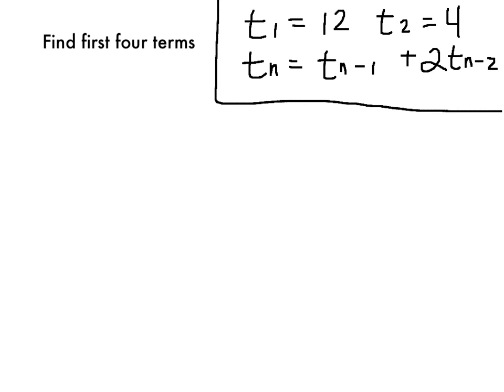What you'll notice about this example is we're given t₁ and t₂. And in our tₙ, or our recursive definition, there's a tₙ₋₁ in there, and a tₙ₋₂. t sub n minus 2 is going to be two terms ago. So we have to look back to the previous term, and then one beyond that. So we're still looking for our first four terms here. t₁ is 12, that's given to us. t₂ is 4, that's given to us. So really we only have to find two more terms.